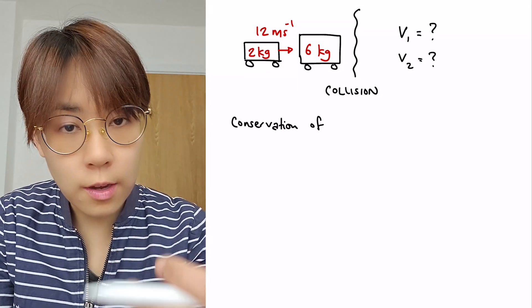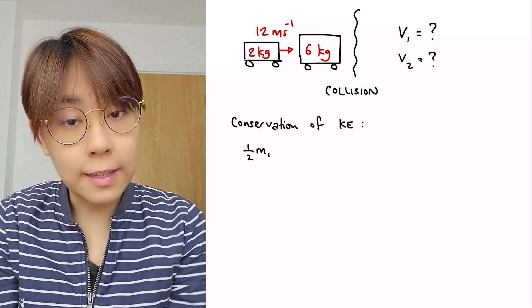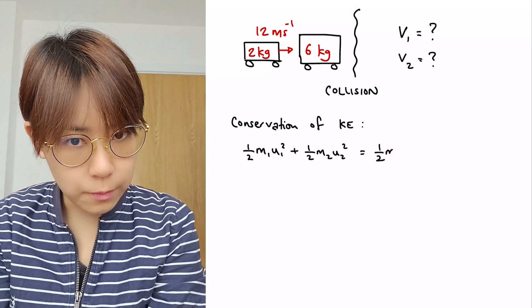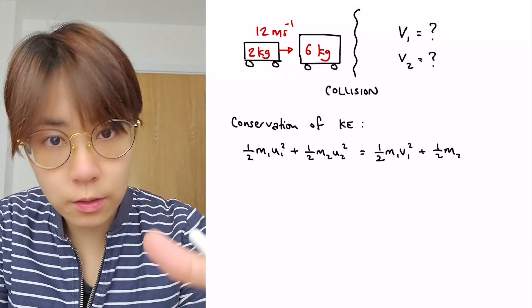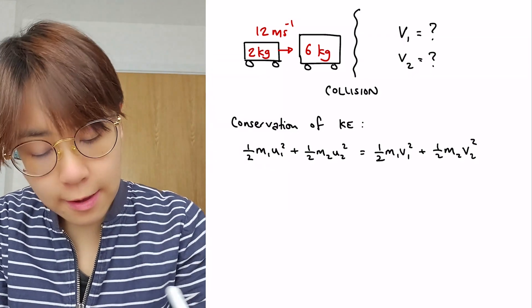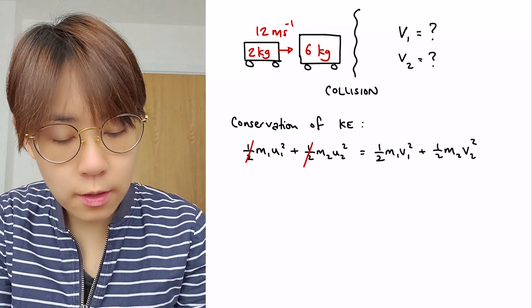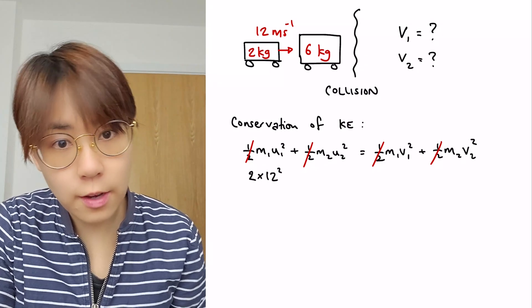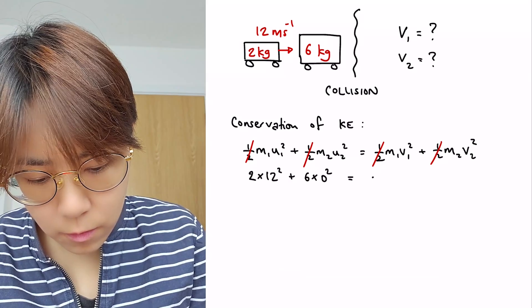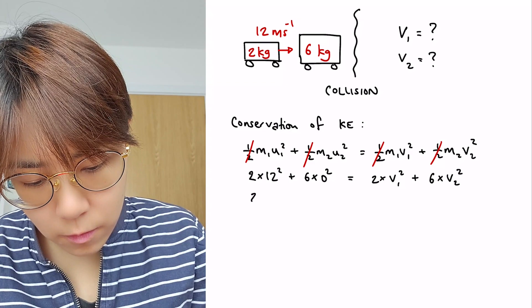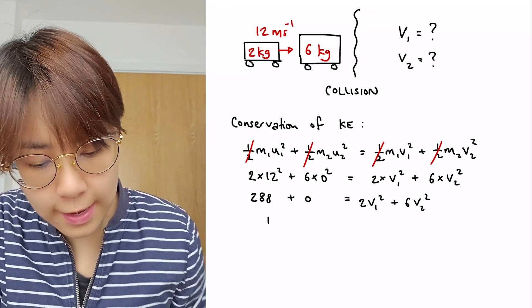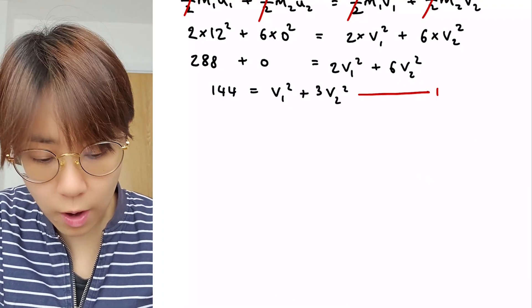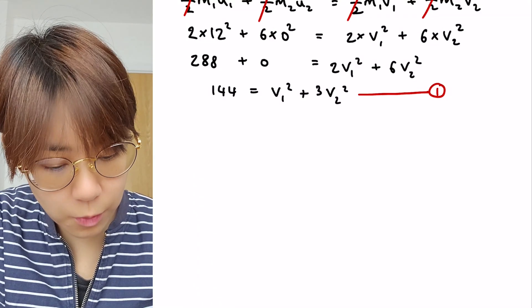We're going to start off using the idea of conservation of kinetic energy as we've seen before. That was the generic equation. Notice how we can cancel the fraction of a half in front of every single component. We're going to then substitute in the value for the masses and the velocities. We're left with 144 is equal to v1 squared plus 3 v2 squared. This is equation number one.